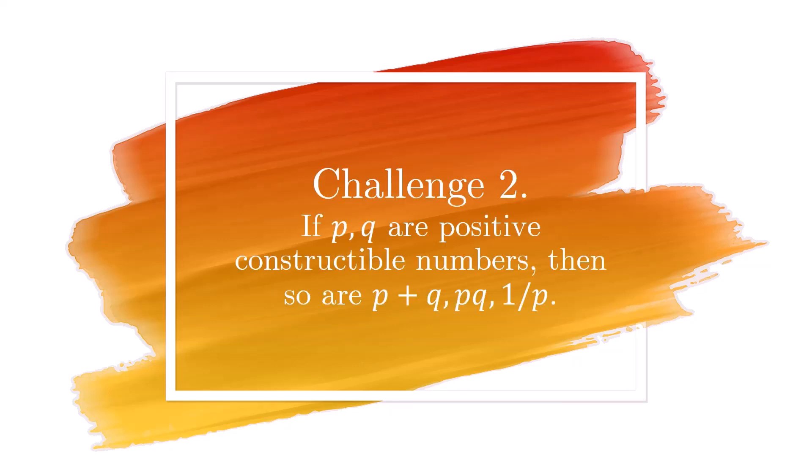Now for the next challenge question. Given constructible numbers P and Q, show that you can take sums, products, and reciprocals, and still get constructible numbers. Well, sum is not too difficult. If AB are distance P apart, draw a circle of radius Q centered at B, and we have P plus Q constructed.